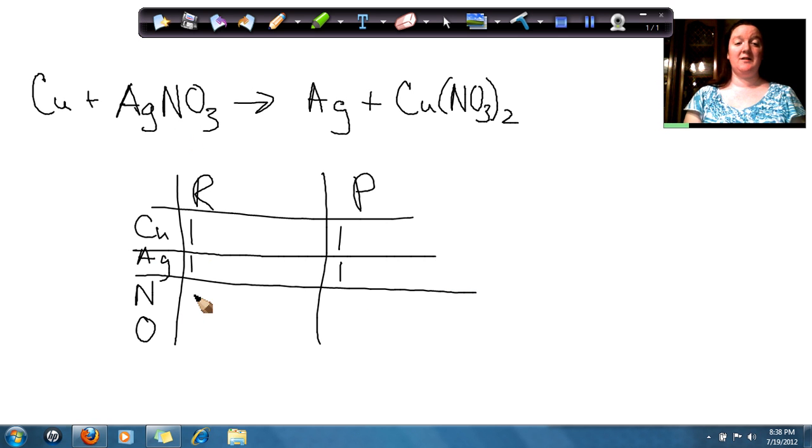If I look at nitrogen, I have one on that side but two nitrogen on my product side. So I need to add a coefficient of two in front of silver nitrate. Now if I look at oxygen, here I have six oxygen, and on this side I also have six oxygen. So now I have it balanced: one copper plus two silver nitrate going to silver plus copper 2 nitrate.